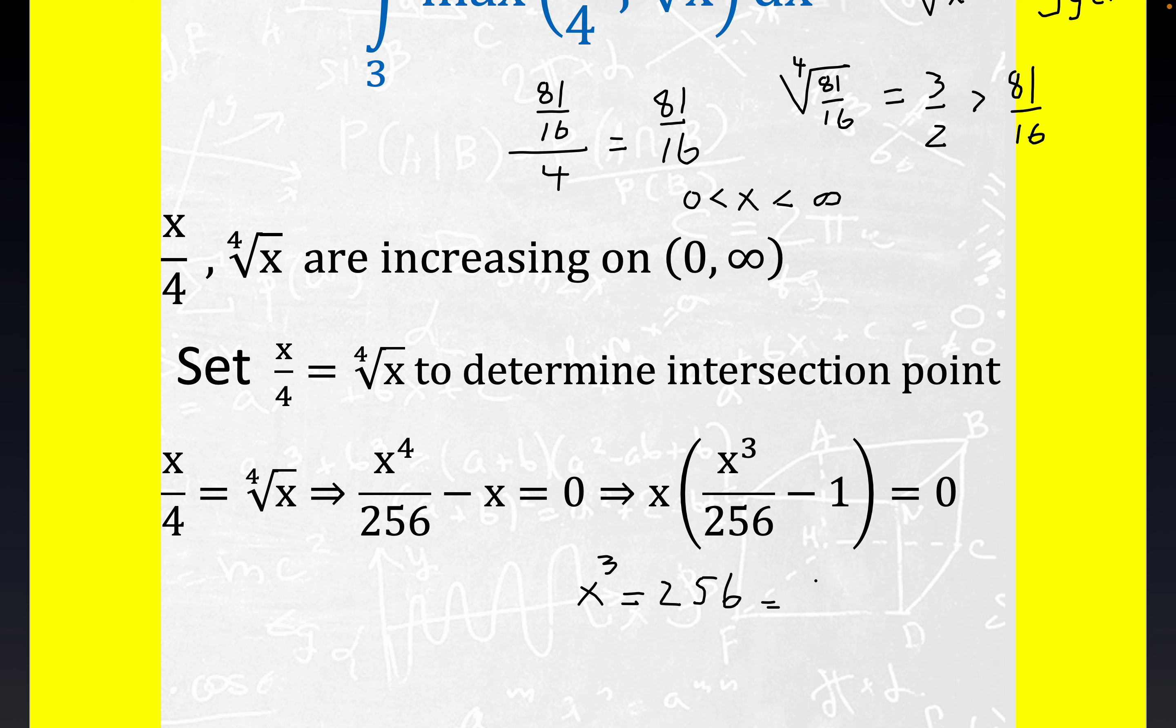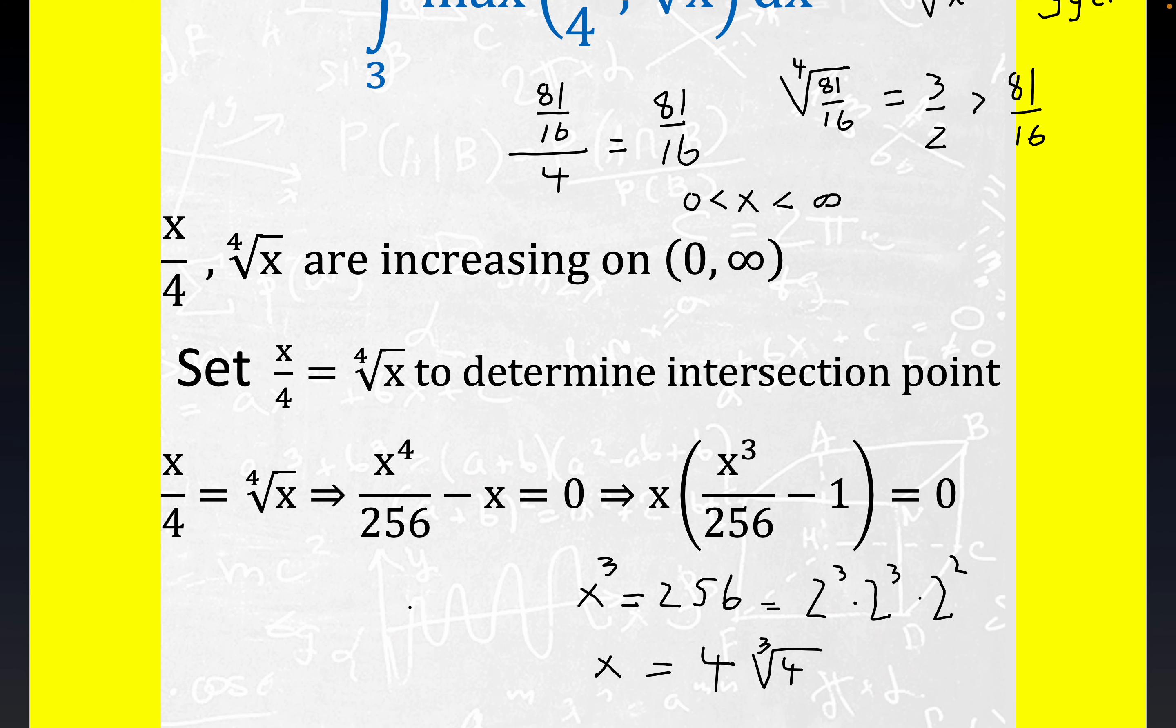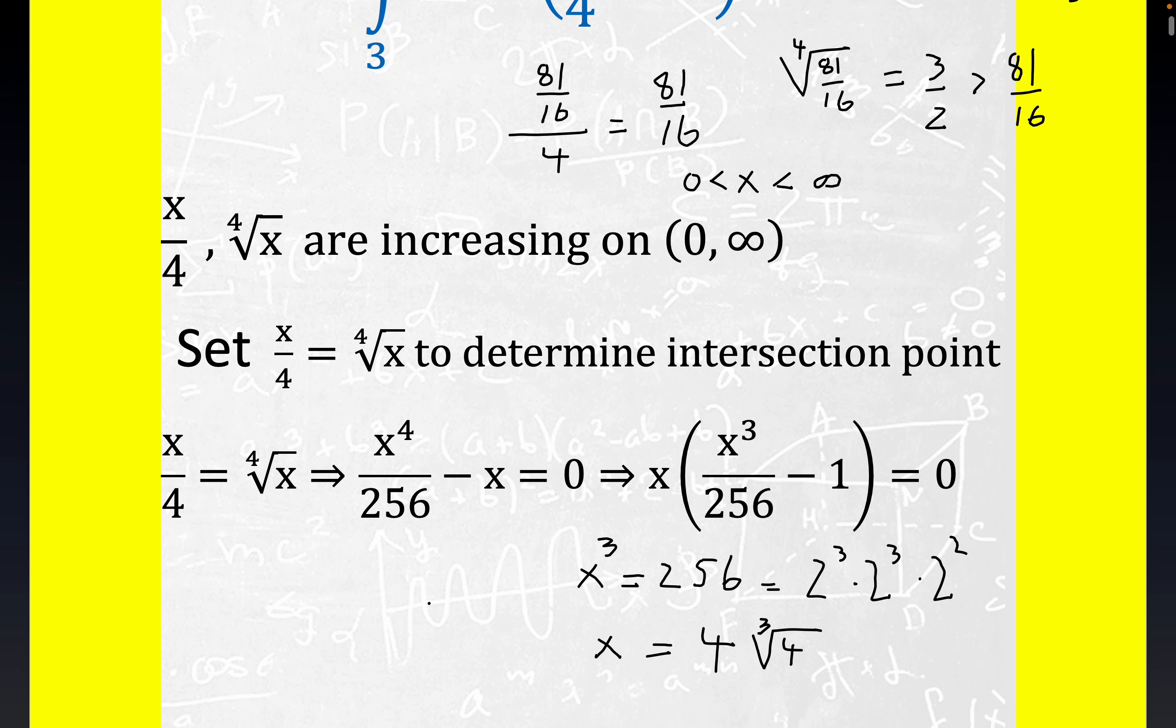This is equal to 2 to the 8th power, so I'll write down 2 cubed times 2 cubed times 2 squared. What we get here is x is equal to the cube root of 2 cubed, which is 2. You've got another 2 cubed there, so you have 2 times 2, which I'll just write 4. Then you can't take the cube root of 2 squared nicely, so we have 4 times the cube root of 4. It's important to know that's where these two graphs intersect, where the two functions share a common x coordinate.